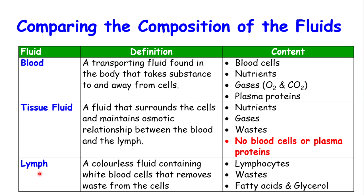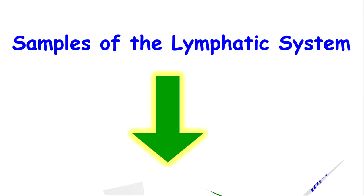The next fluid is the lymph — a colorless fluid that contains white blood cells and removes waste from the cells. What you may find in the lymph includes lymphocytes, which are white blood cells, waste products, and nutrients such as fatty acids and glycerol. We are focusing on the main substances as they relate to the lymphatic system and the functioning of these fluids.